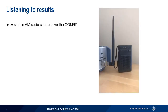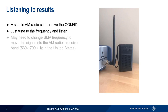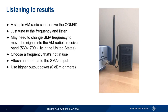Another way to verify the COMID is using a simple AM radio. We just tune to the frequency of our NDB and hear the pattern of DITs and DAs. Note that most AM radios don't go down to 190 kHz, so you may need to move your SMA transmit frequency into the AM broadcast band — that is, 530 to 1700 kHz in the United States. You'll get better results if you choose a frequency not in use by a local broadcaster, attach a simple antenna, and turn up the output power.